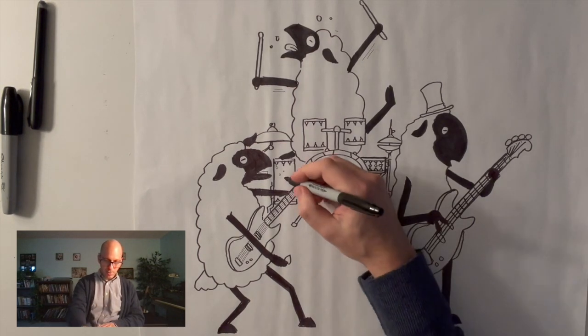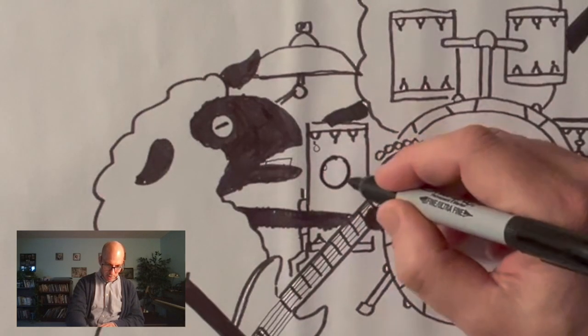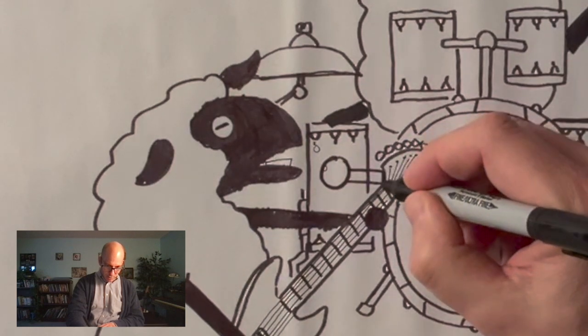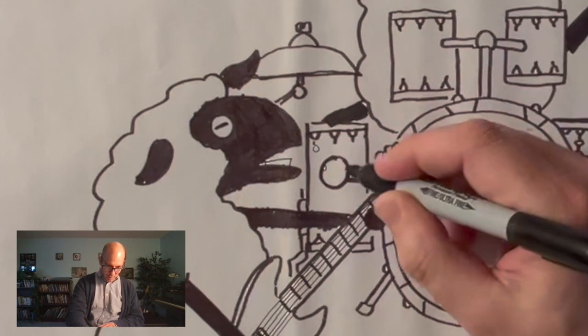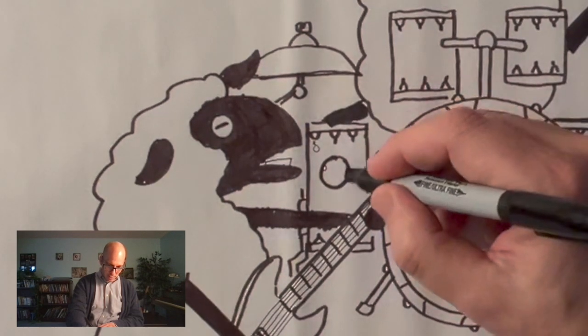So I mentioned before that this sheep is singing, right? You can't really sing in a rock band if you don't have a microphone. So I'm going to draw this thing here. It's like a circle and then a tube coming out of it. That's going to be my microphone.